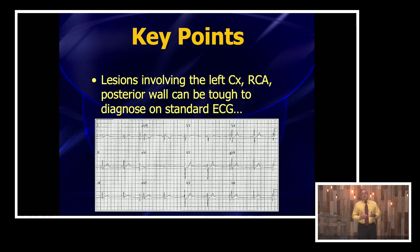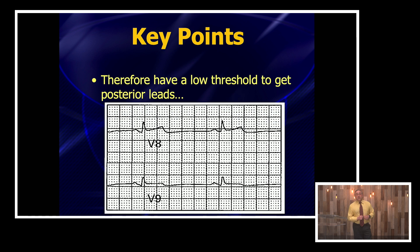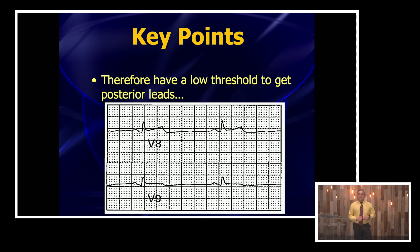They talk about lesions involving the left circumflex, the RCA, and the posterior wall. These can be very difficult to diagnose because posterior MIs can hide from you. Studies have shown that posterior infarctions are probably the most commonly missed type of MI. What they say is have a low threshold to get posterior leads on these patients. When there's any ST depression in your anterior leads — especially V1, V2, V3 — get your posterior leads, and you might be surprised to pick up an isolated posterior STEMI.